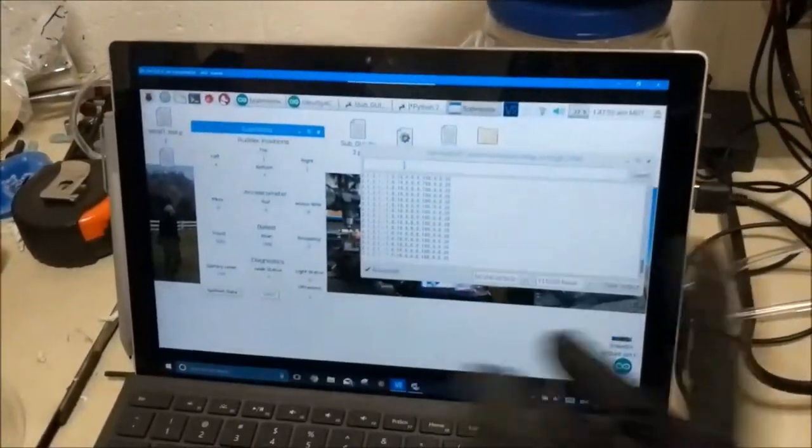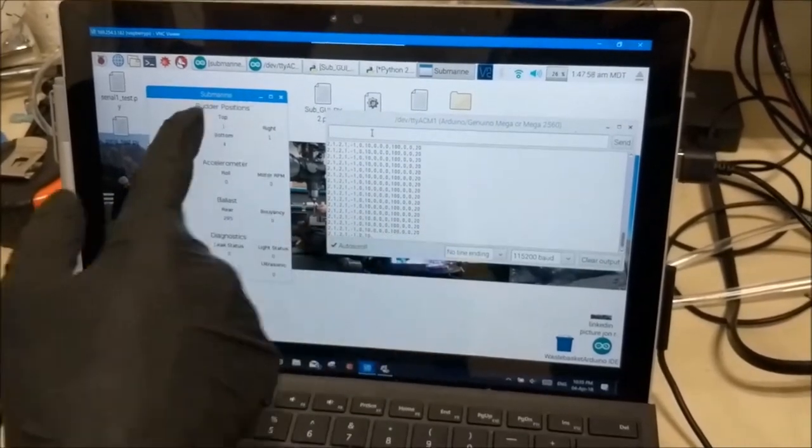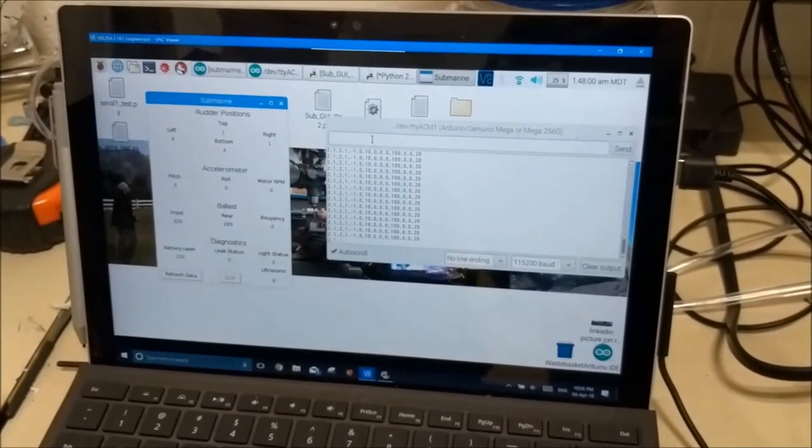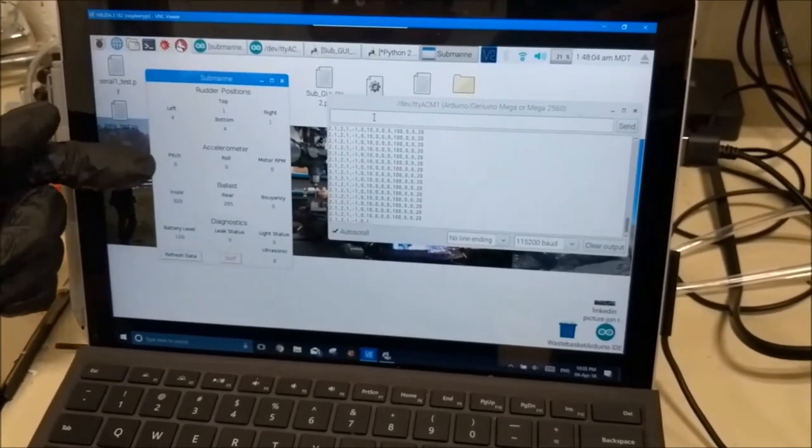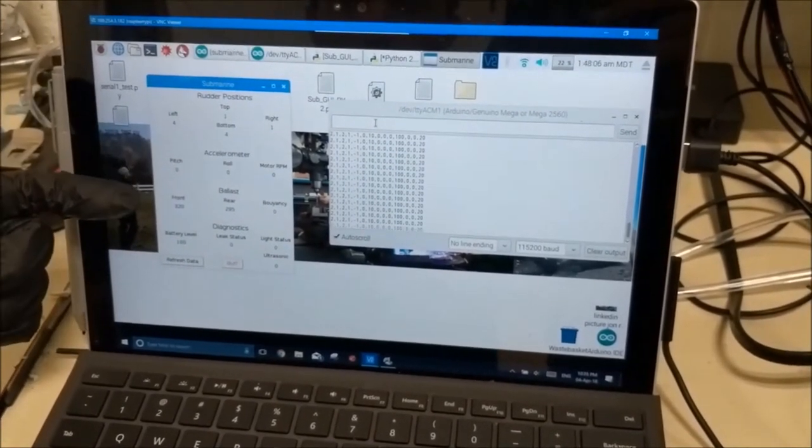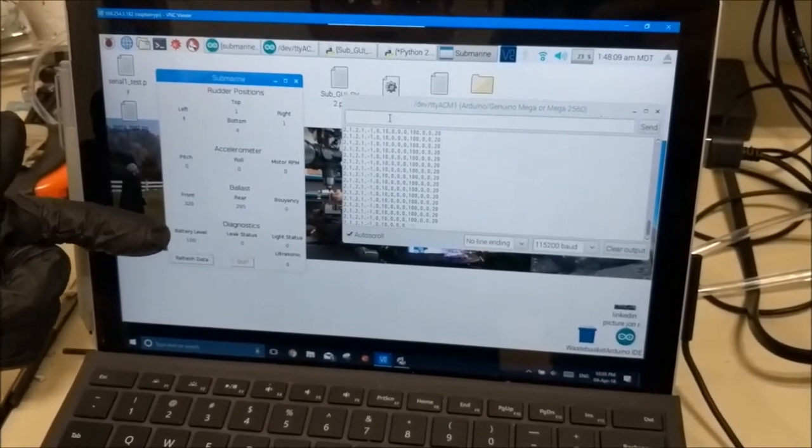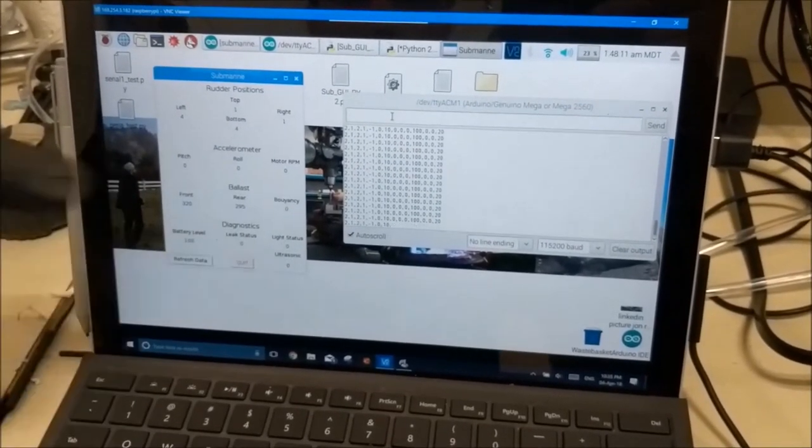And the Arduino is sending this data which we parse and generate this GUI which shows the rudder positions, the accelerometer data, motor RPM, the ballast, and other diagnostics such as leak status and light and ultrasonic.